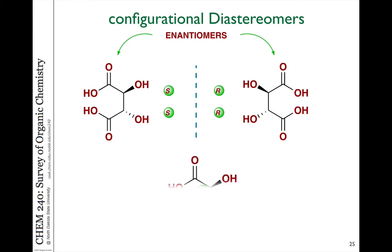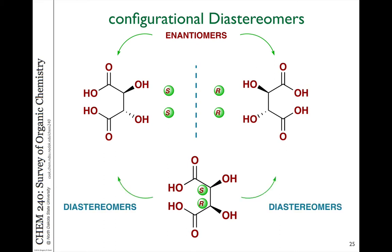If you take a look at this molecule, notice the configuration compared to either one of those two on top is not completely opposite or completely the same. One of the configurations has changed and one is the same. In this case, it's not a mirror image but it is a different stereoisomer — not identical to the ones at the top. So this molecule is in a diastereomer relationship to either of the molecules on the top.